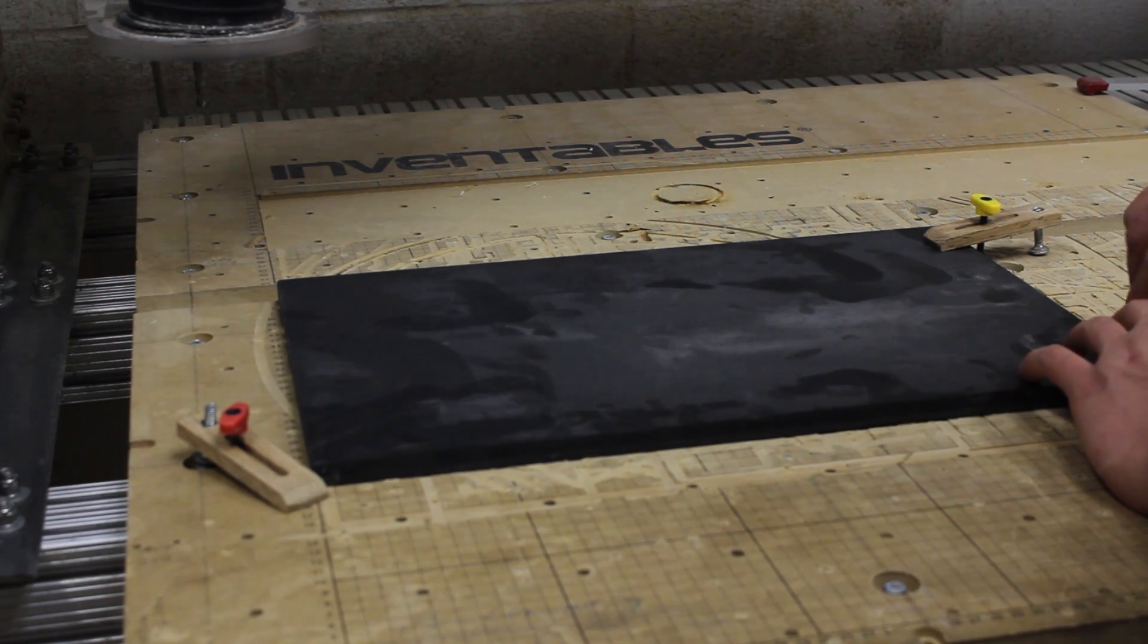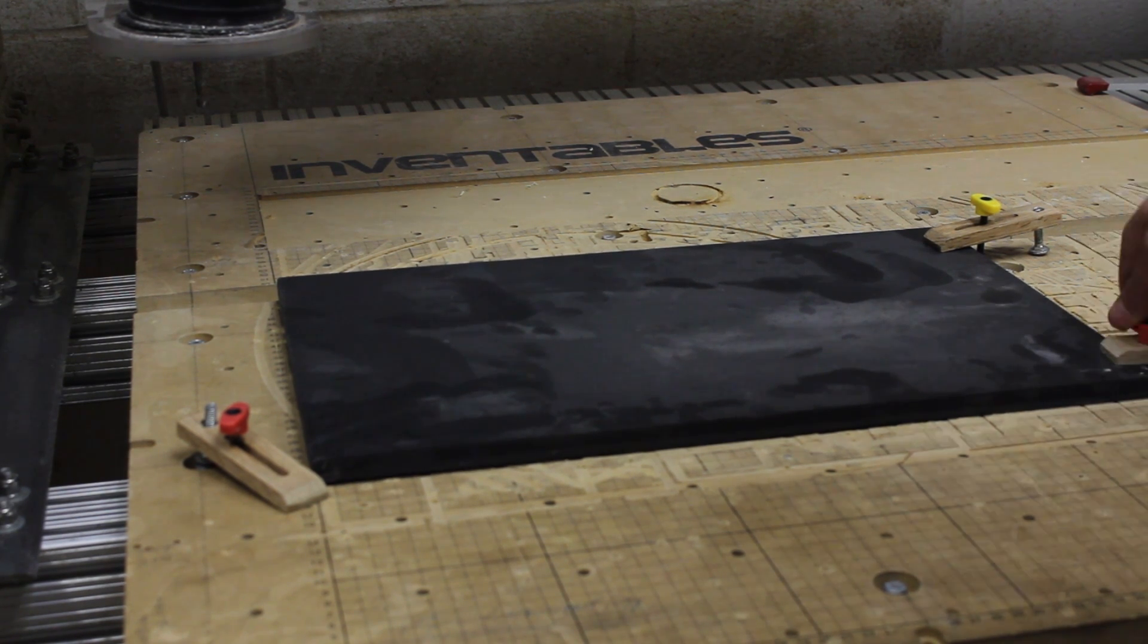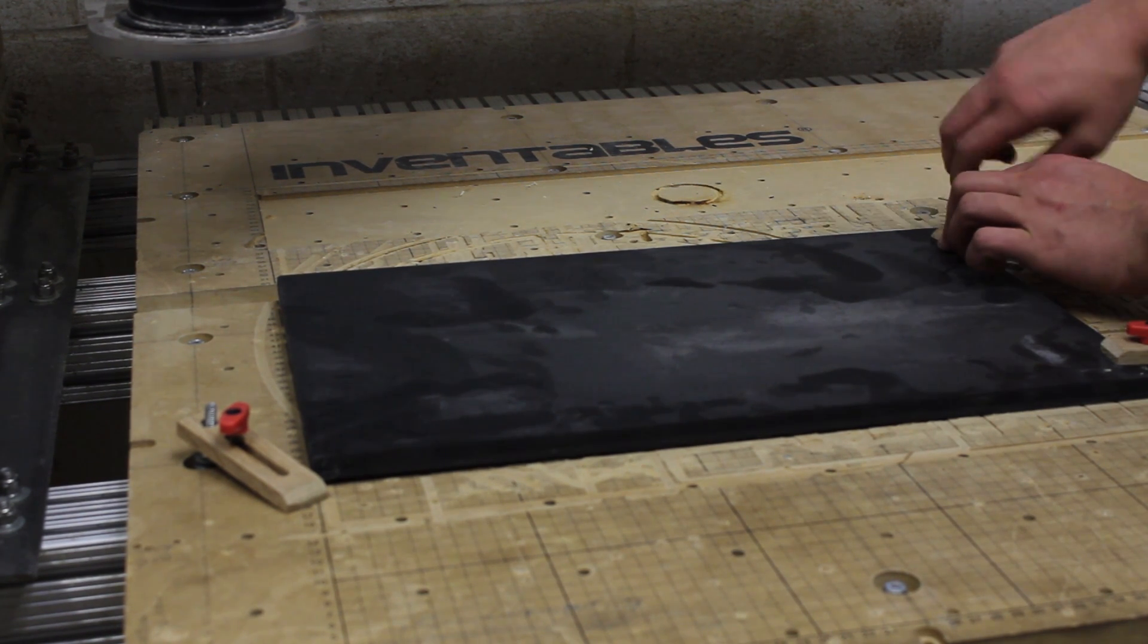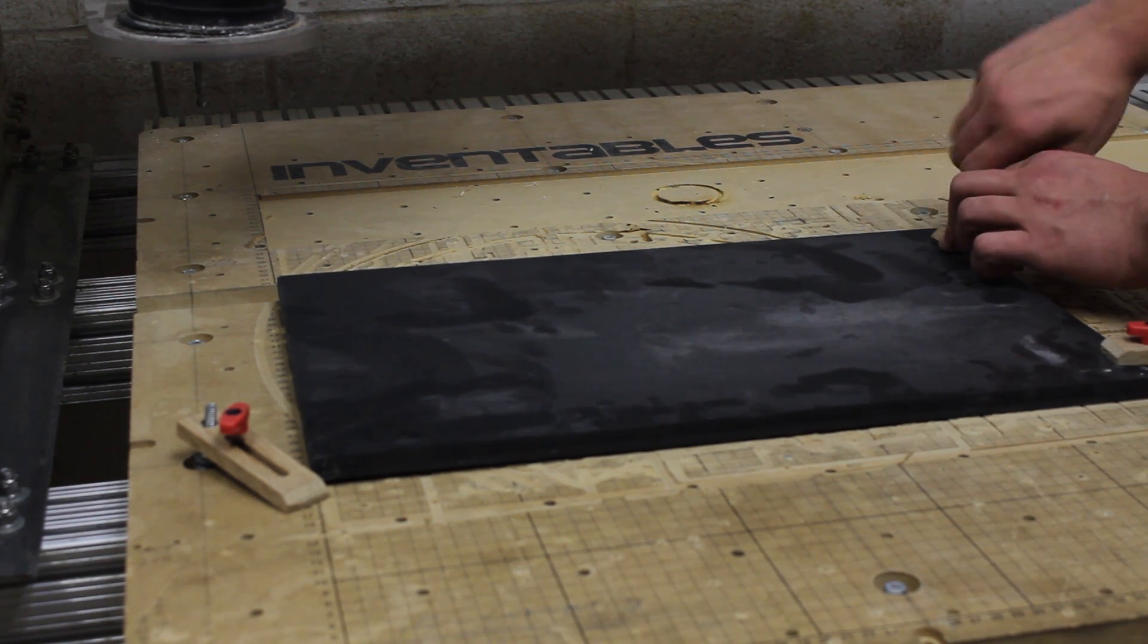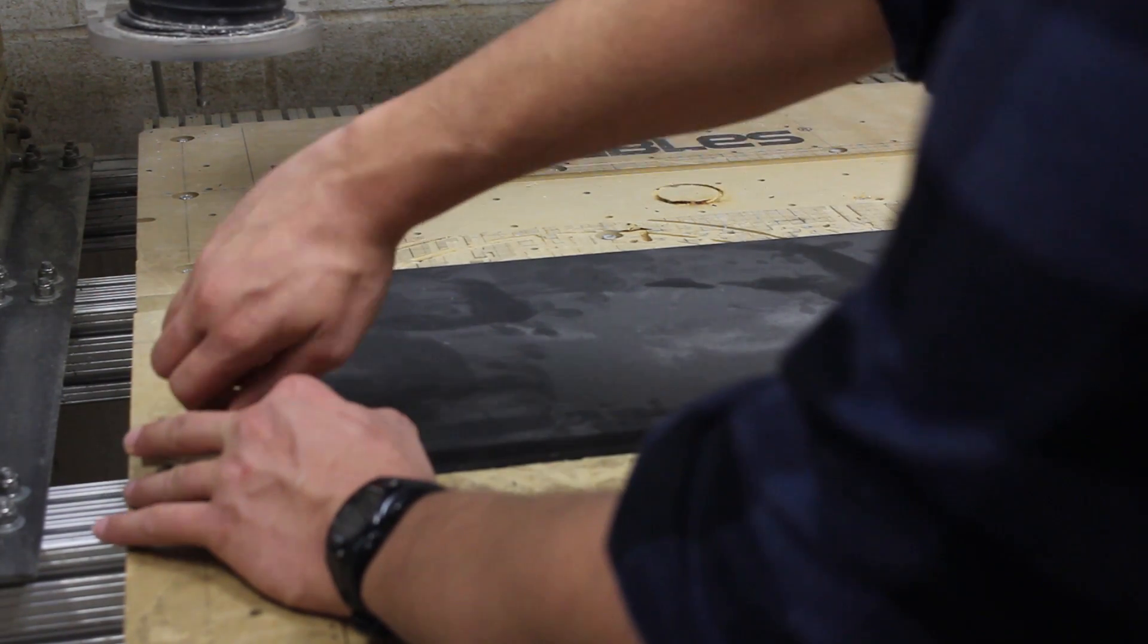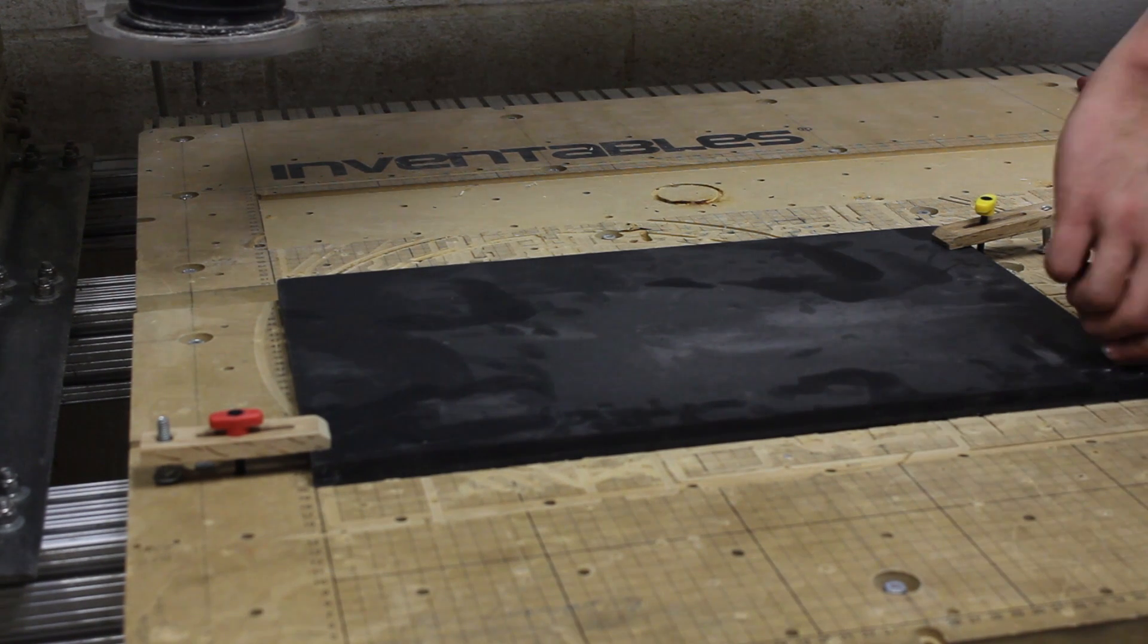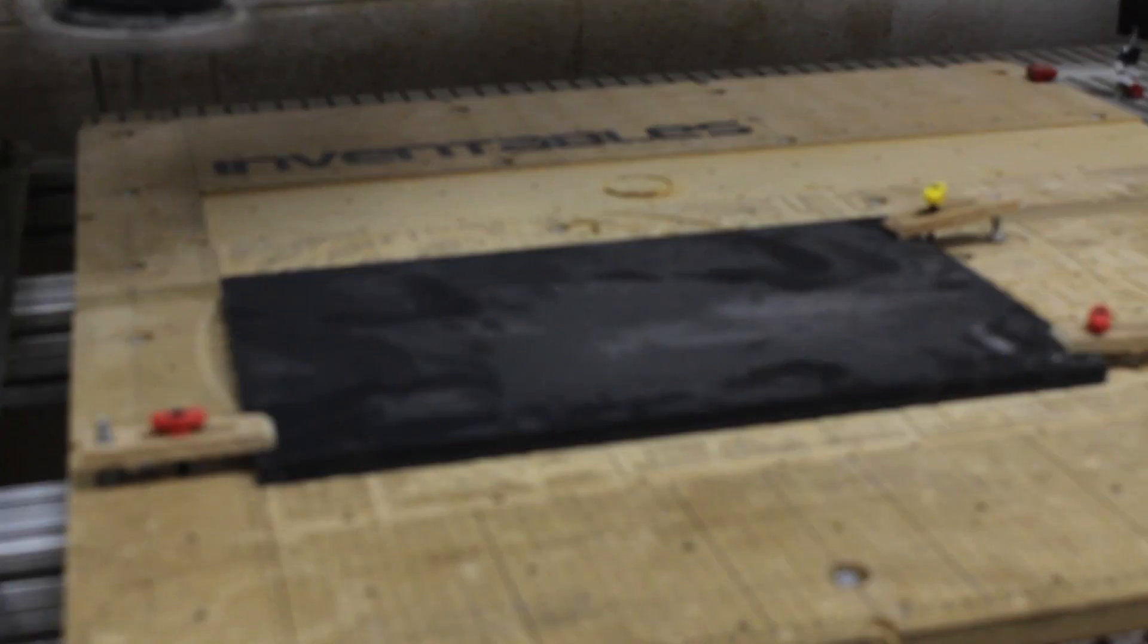If I was trying to square something up more precisely I may use an actual square and square it to the edge of the MDF here, but for this piece I have enough tolerance on each side to allow for some variation left and right and up and down. Now I'm just placing my bench dogs onto the machine and tightening these down nice and tight. So now our piece is tightened onto the machine.